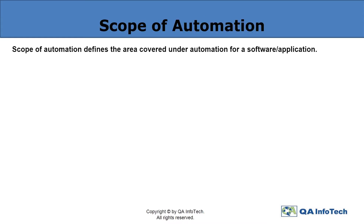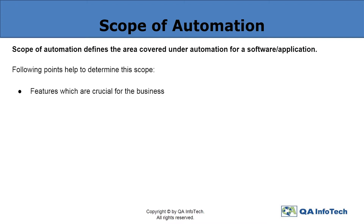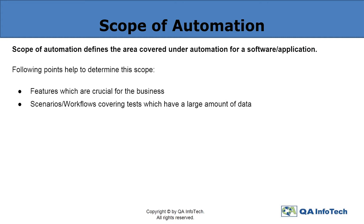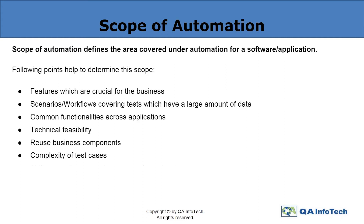After tool selection, one needs to define the scope of automation, that is the area to be covered under automation for a software or an application. Certain points that help in determining this scope may include the features which are crucial for the business, the scenarios or workflows which require a large amount of data, the technical feasibility, complexity of the test cases, and the ability to perform cross-browser testing using the same test cases, etc.